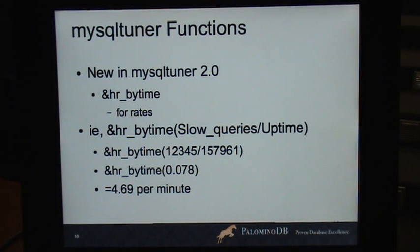There's one new function called HRBYTIME, human readable by time. And it's for rates. So if you do something like human readable by time, slow_queries divided by uptime, that's going to give you a rate, right? And so here's 0.078, whatever. And what is 0.078? This is 0.078 slow queries per second. Well, what does that mean? I have no idea. So it makes it pretty. It basically multiplies out until it gets over 1. Because it's much more easy to understand 4.69 per minute than 0.078 per second. You might say 0.078 per second, that's not bad. But to say, okay, it's about 5 per minute, now you know exactly how bad or good that is.